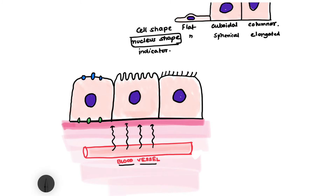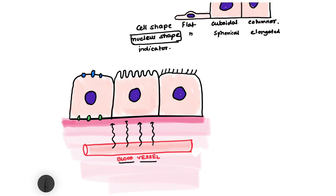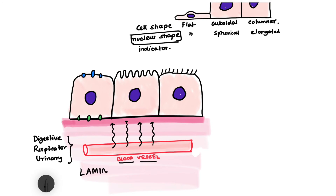No matter how thick the epithelial tissue is, it does not contain any blood supply of its own, so it is completely dependent on the underlying connective tissue for nutrient supply. In the digestive system, respiratory system, and urinary system, this underlying connective tissue is known as the lamina propria.